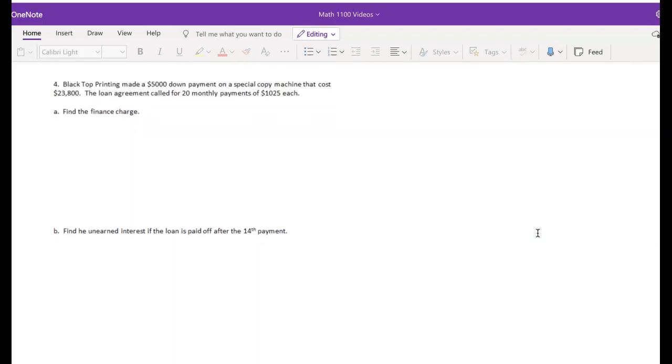Number four, the blacktop printing made a $5,000 down payment on a special copy machine that was originally $23,800. That's the cash price. The loan agreement called for 20 monthly payments of $1,025 each. First, let's find the finance charge. The finance charge is the difference between the total money paid for the item minus its cash price. Okay, so let's find the total money paid for the item.